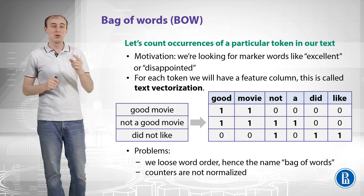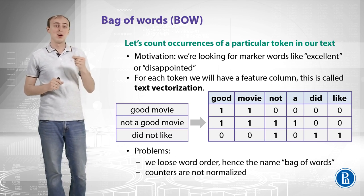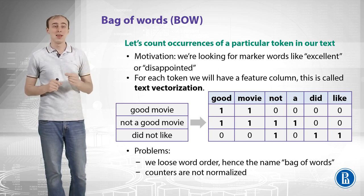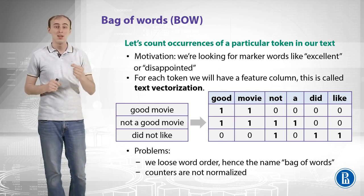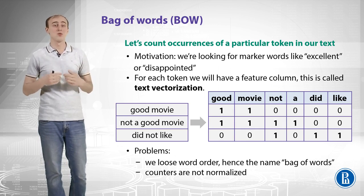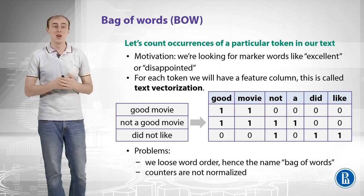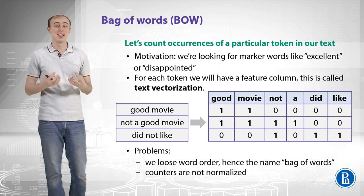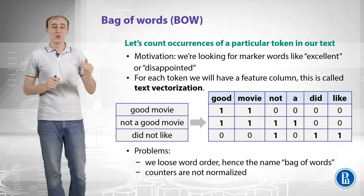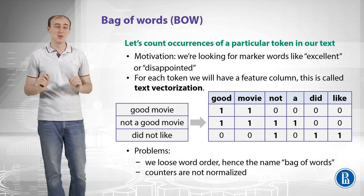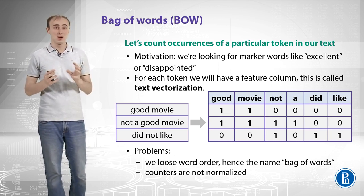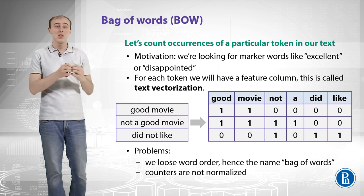Let's take for example the 'good movie' review. We have the word 'good' which is present in our text, so we put one in the column that corresponds to that word. Then comes the word 'movie' and we put one in the second column to show that word is seen in our text. We don't have any other words, so all the rest are zeros. That is a really long vector which is sparse in a sense that it has a lot of zeros. For 'not a good movie' it will have four ones and all the rest are zeros. This process is called text vectorization, because we replace the text with a huge vector of numbers.